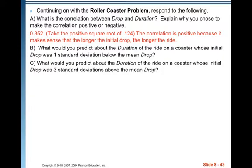So what is the correlation between drop and duration? Explain why you chose to make the correlation positive or negative. Well, it's going to be 0.352, and you get that by taking the positive square root of 0.124. The correlation is positive because it makes sense that the longer the initial drop, the longer the ride. The association is positive. Therefore, the value of the correlation would be positive. If you had a negative association, then you just take the square root of 0.124 and then pop a negative in front of it.